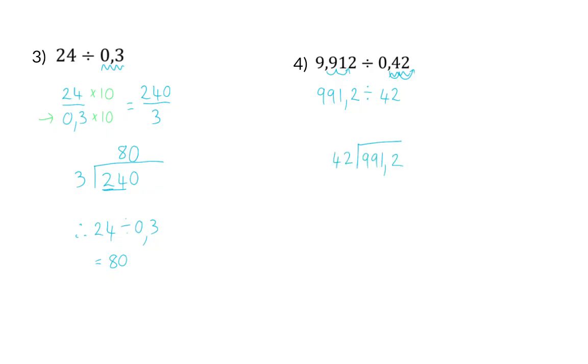And again we're going to use long division. 9 cannot divide into 42, but 99 can be divided by 42 and it goes into it twice. 2 times 42 gives us 84. And if I now subtract 99 minus 84, I'm left with 15. Next I bring down the 1, and now I have to divide 151 by 42. And 3 times 42 can fit into 151. This gives me 126, and once I've subtracted again I'm left with 25. Now I bring down my last 2.